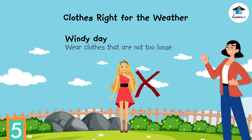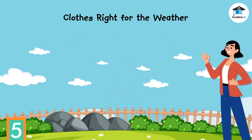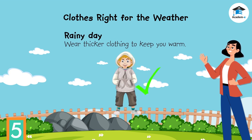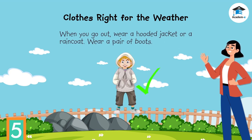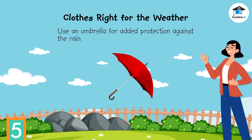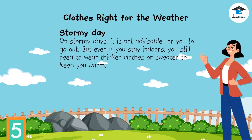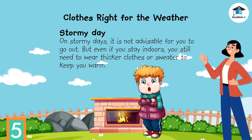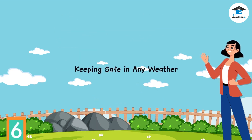On rainy days, wear thicker clothing to keep you warm. When you go out, wear a hooded jacket or a raincoat to keep your clothes dry, and wear a pair of boots to keep your shoes dry. Use an umbrella for added protection against the rain. On stormy days, it is not advisable to go out, but even if you stay indoors you still need to wear thicker clothes or a sweater to keep you warm.